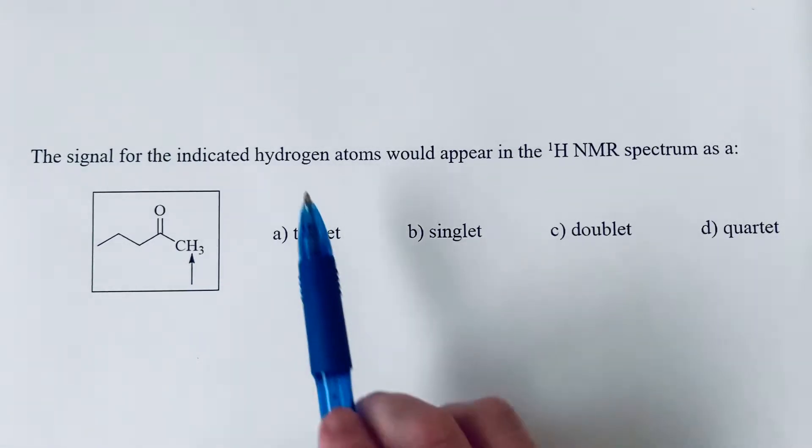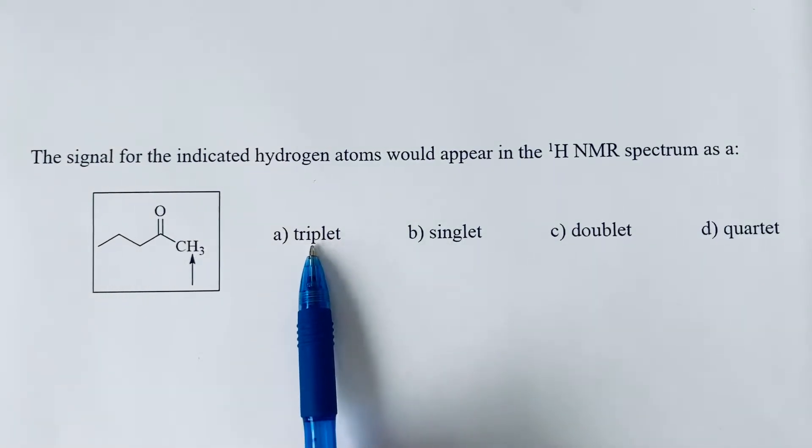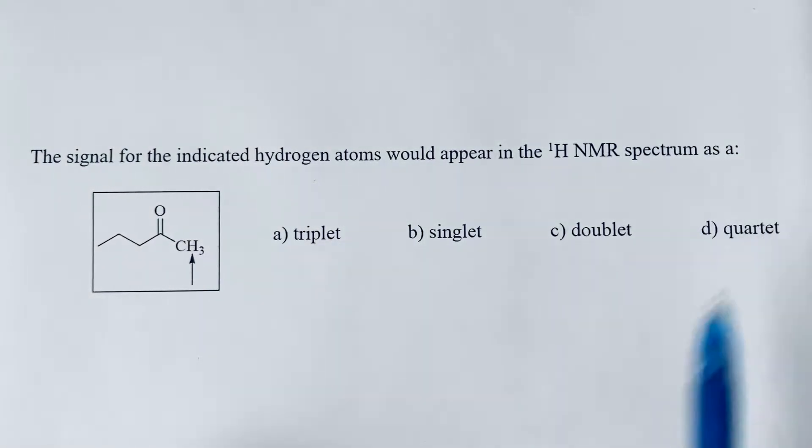The signal for the indicated hydrogens would appear in the NMR spectrum as, and we see the terms triplet, singlet, doublet, quartet.